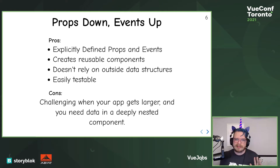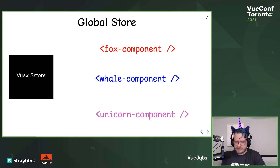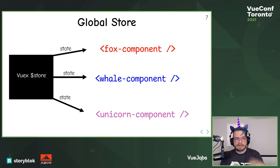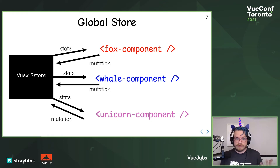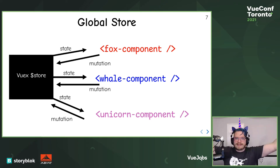So let's talk about global stores. We need to get data down into something that's really deep. A global store is the obvious solution — you can access state from anywhere on your Vuex $store, and you can update data from anywhere by committing a mutation. Problem solved.